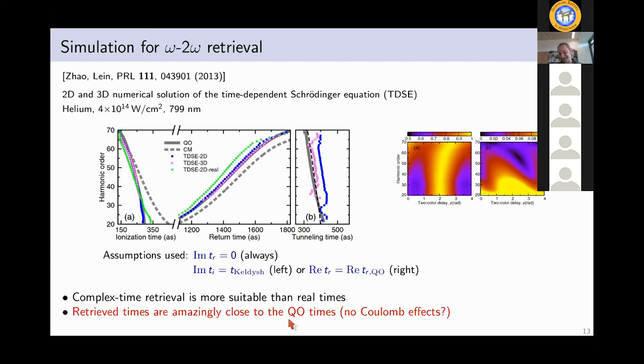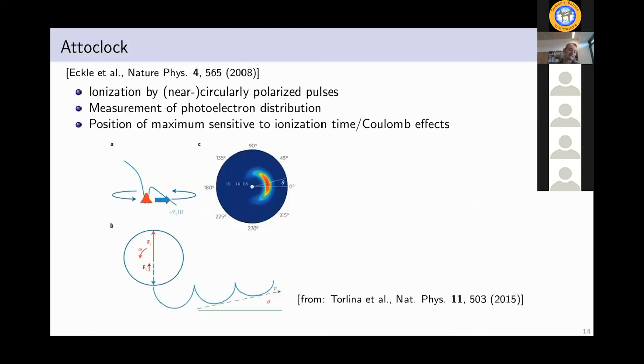So two things. One thing is important. I should emphasize that the point here is that you can measure or determine ionization time and return time for every harmonic order separately. And now there is one striking result here. These retrieved times are amazingly close to the quantum orbit times. And I remember that probably five years ago when I gave a talk and I included this result, Dieter, who is our chairman now, actually asked me this question. Why is this result so close to the quantum orbit model? Are there no Coulomb effects? Actually at the time I couldn't give a good answer, but I can give the answer now.